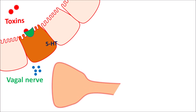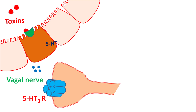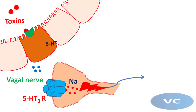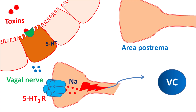The released 5-HT can activate vagal afferent neurons, which are equipped with 5-HT3 receptors. The released 5-HT acts on these 5-HT3 receptors, causing opening of sodium channels. Sodium enters to produce depolarization, generating a vagal signal that is transmitted to the vomiting center through the chemoreceptor trigger zone.